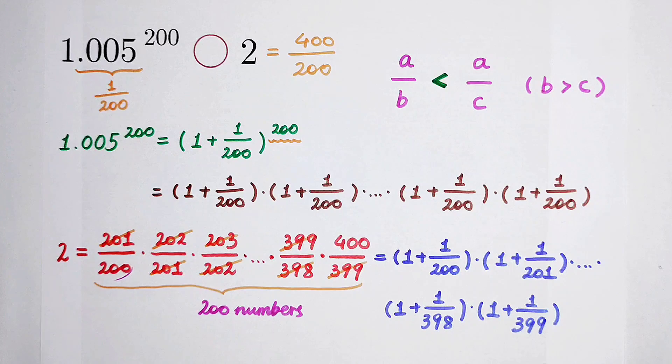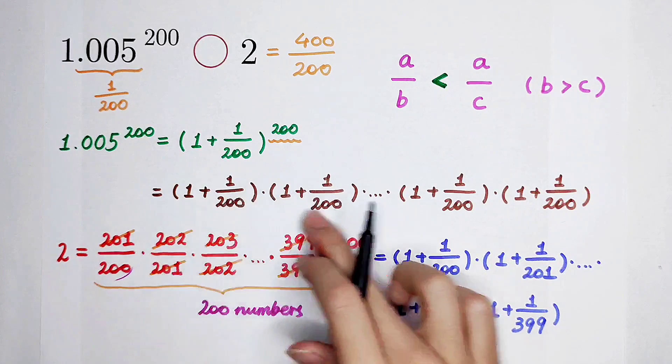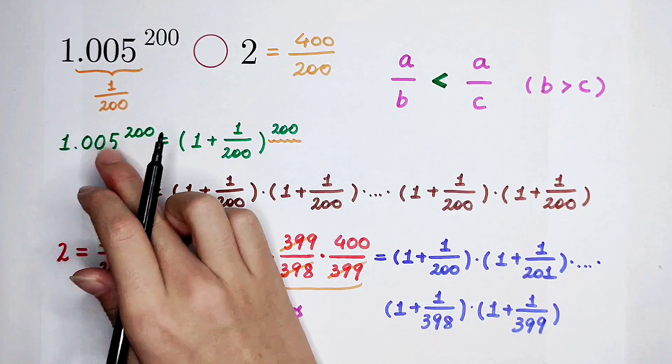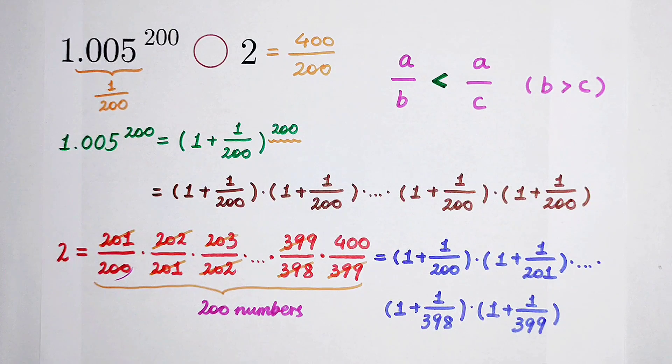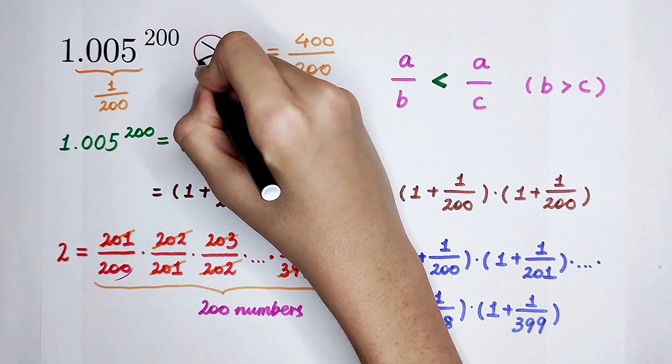The term which is in blue is equal to 2. And the term which is in brown is equal to 1.005 to the power of 200. So, we can get the answer. 1.005 to the power of 200 is always bigger than 2.